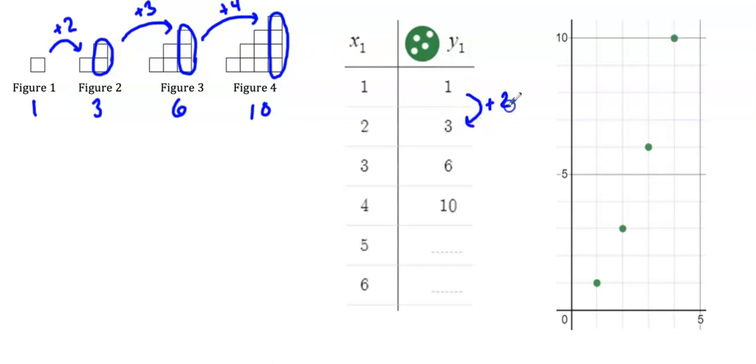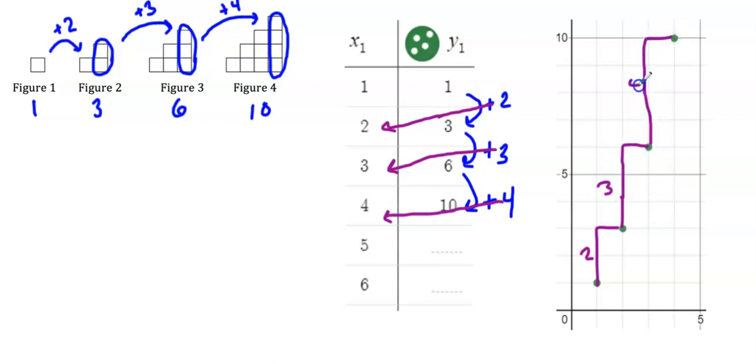If I'm looking at this pattern, I can see that it is not linear. Here I'm adding two, so that's the two that I went from figure one to figure two. Then I'm adding three, and then I'm adding four. I can see that the amount that I'm adding is the same as the value of x. I can also see that this is not linear from my graph. I can see how it's curving. It's going up two, then it's going up three over one, and going up four over one.